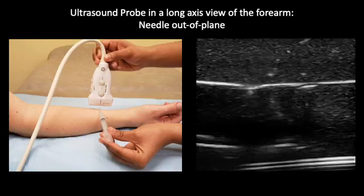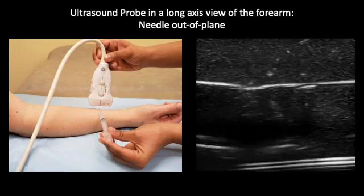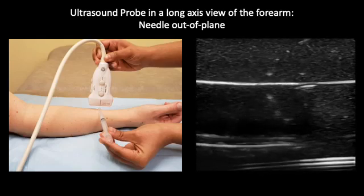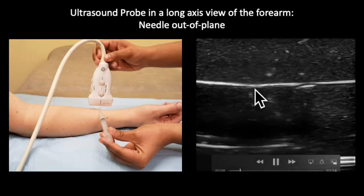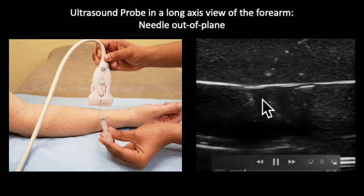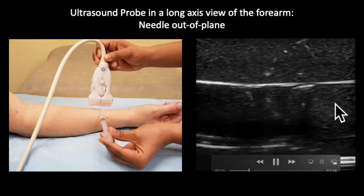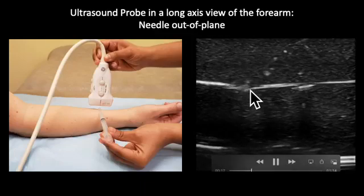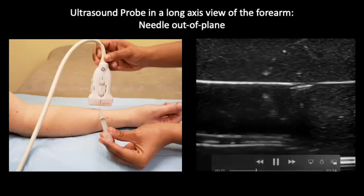Finally, in this picture on the left, the ultrasound probe is in a long axis view with the needle out-of-plane. In the video on the right we can again see our simulated anatomical structure in the long axis view. We can see the tip of the needle in the left center of the video. Again, notice how just the tip of the needle is visible on the screen. The needle is again shown going in and out of the vessel.